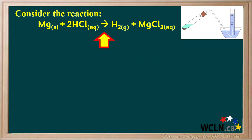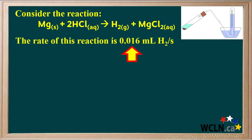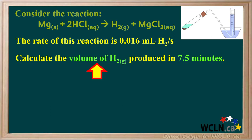Let's do another problem. We're given the reaction of magnesium with hydrochloric acid to produce hydrogen gas and aqueous magnesium chloride. This time we're told the rate of this reaction is 0.016 milliliters of hydrogen per second. We're asked to calculate the volume of hydrogen produced in 7.5 minutes when the reaction proceeds at this rate. We'll start by writing down the given quantity with the single unit: 7.5 minutes. But notice the rate is given in milliliters of hydrogen per second.